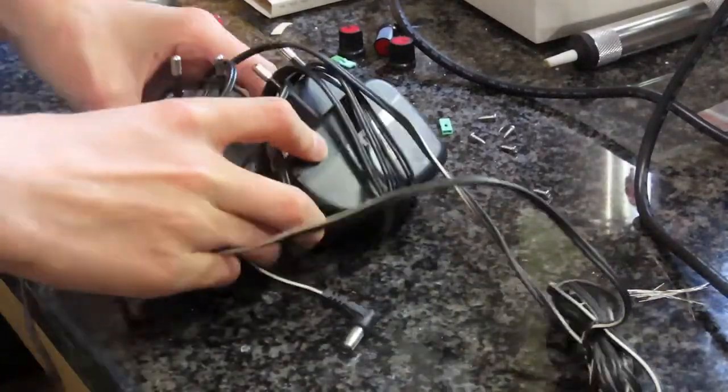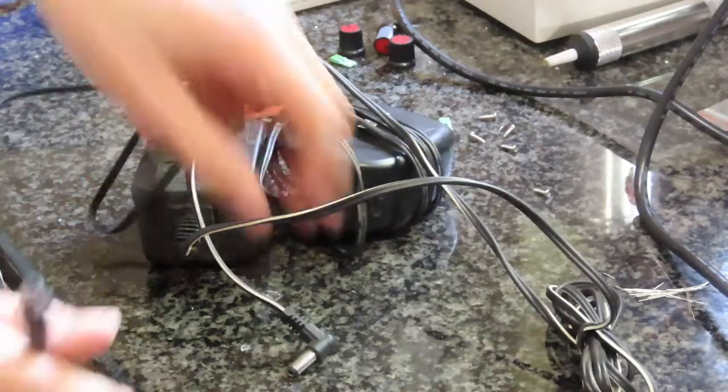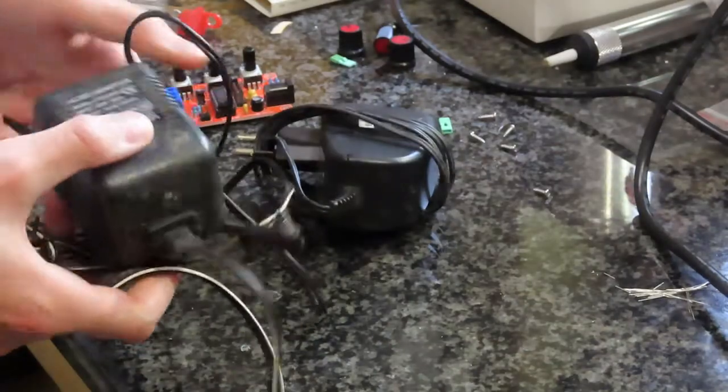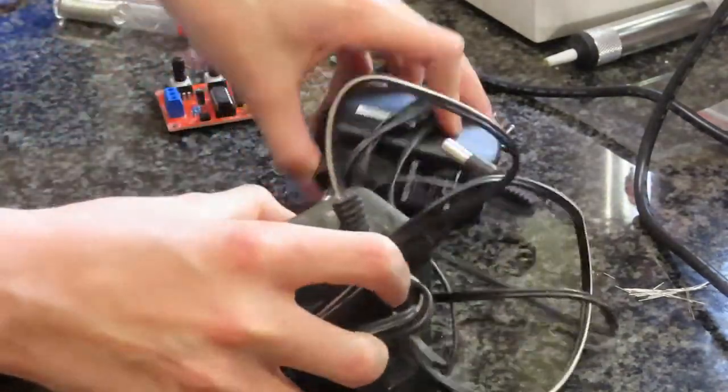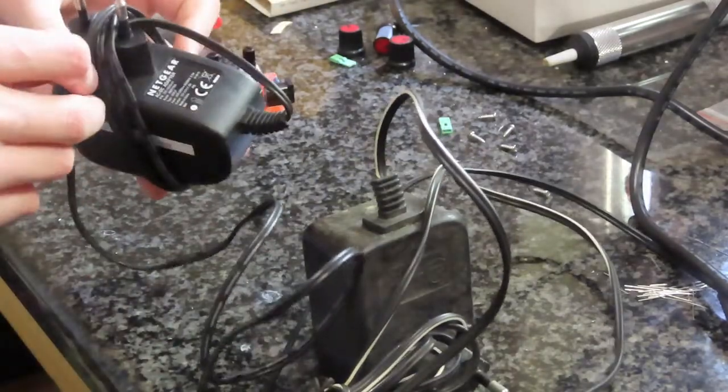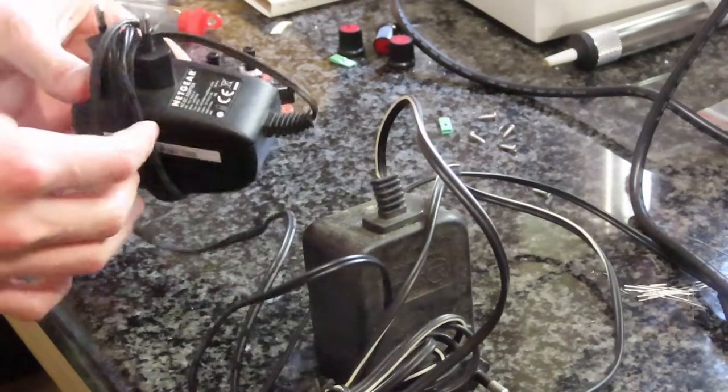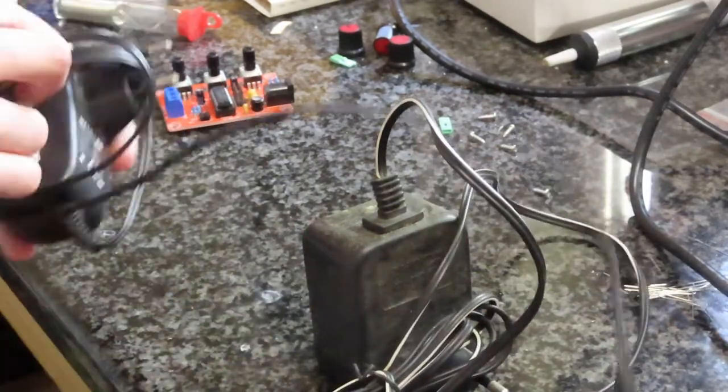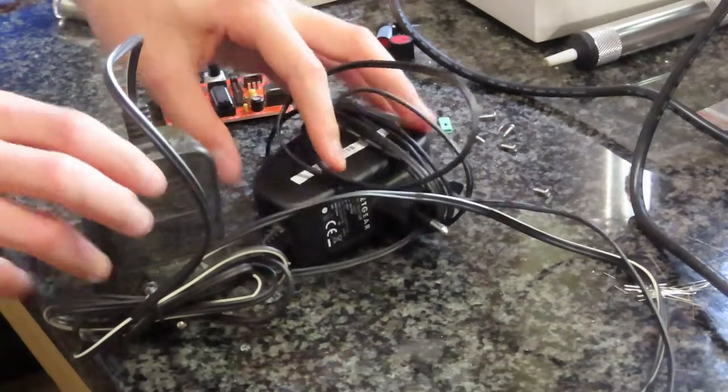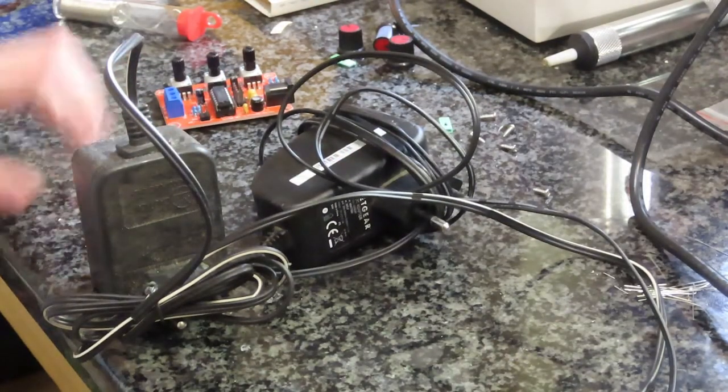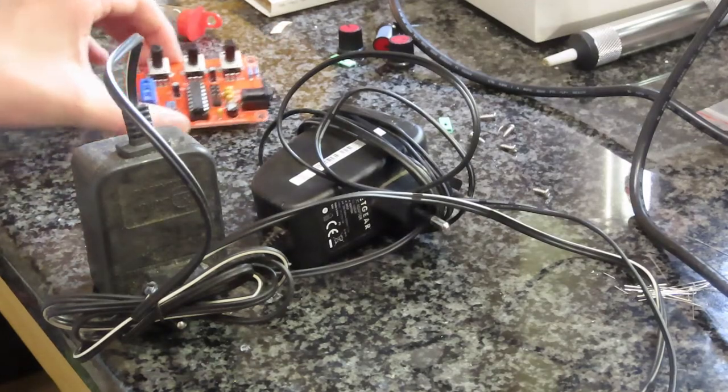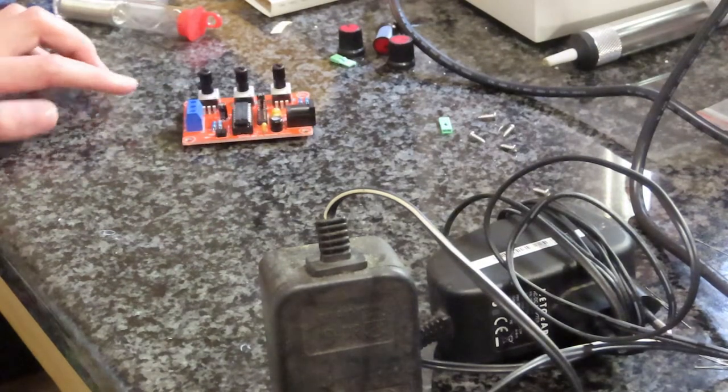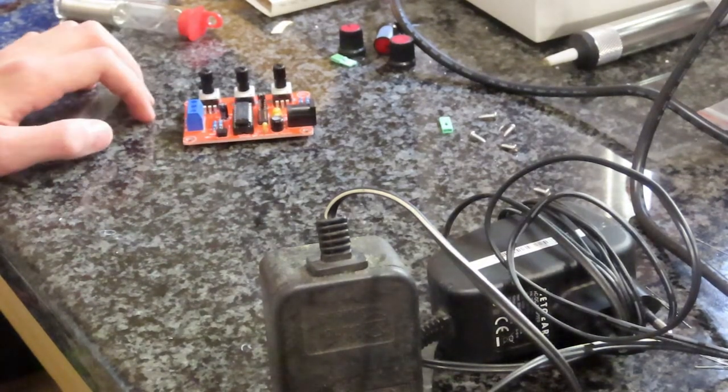So I found two power supplies in the box, both with barrel connectors. This one is 9 volts at 500 milliamps. Whereas this one, it's a Netgear one from a router. This one is 12 volts at 1.5 amps. So I'm thinking we should just use the 9 volt one, but we'll compare between the two to see which one works better. So what we're going to do is put this little guy in its case. We're going to put this in its case and then hopefully we're going to connect some wires up to this and test it.